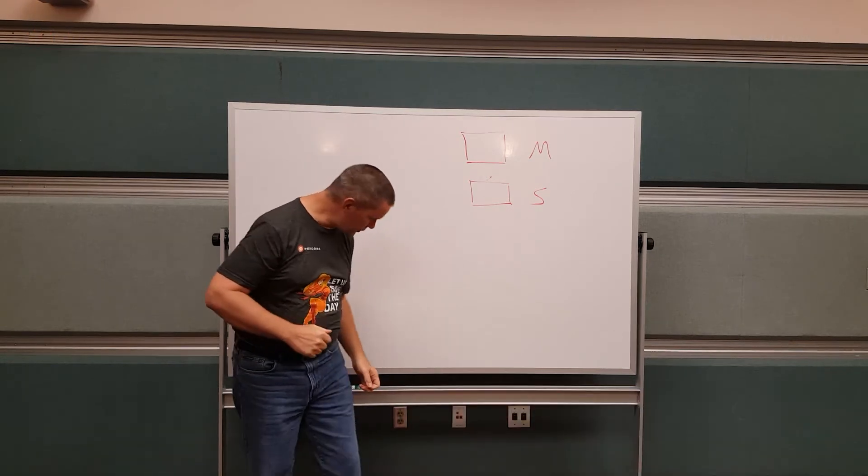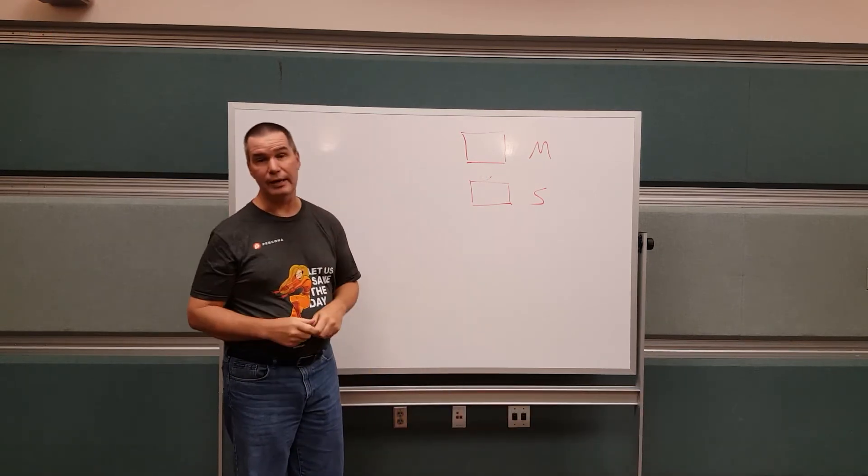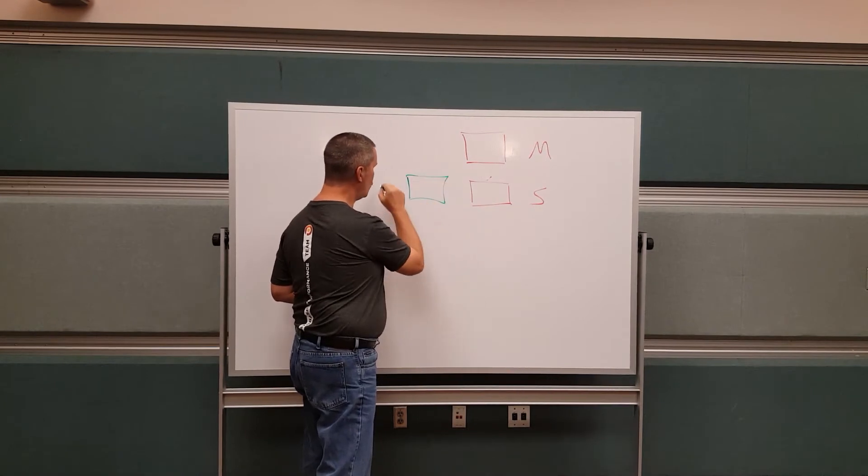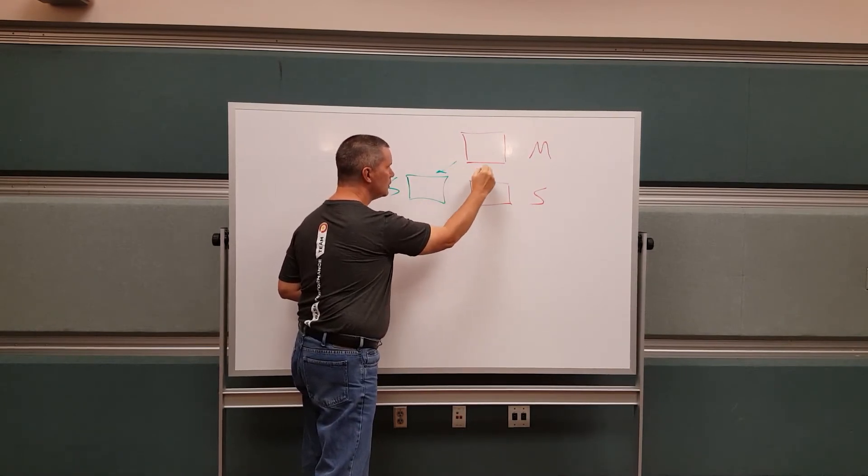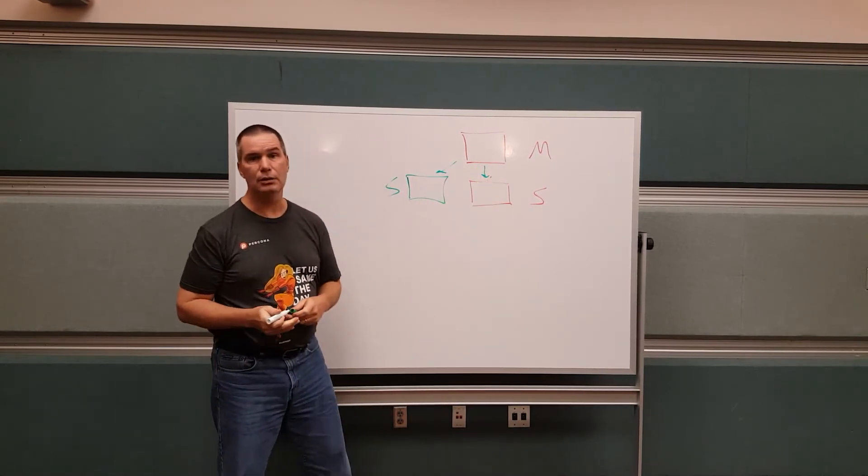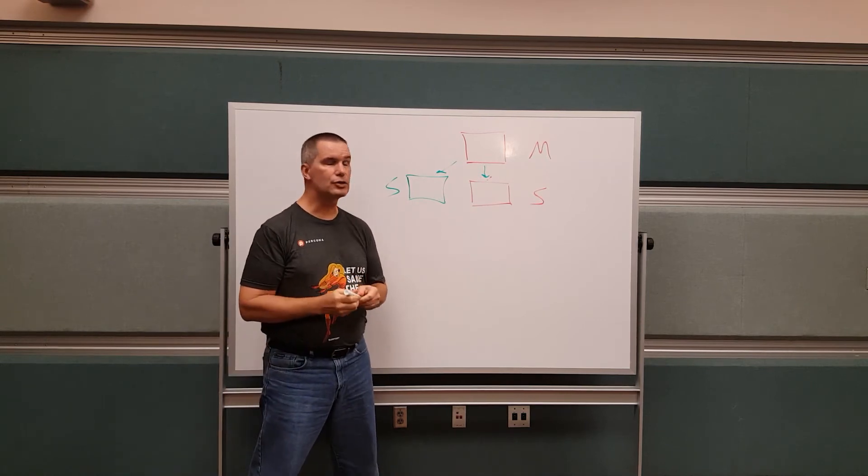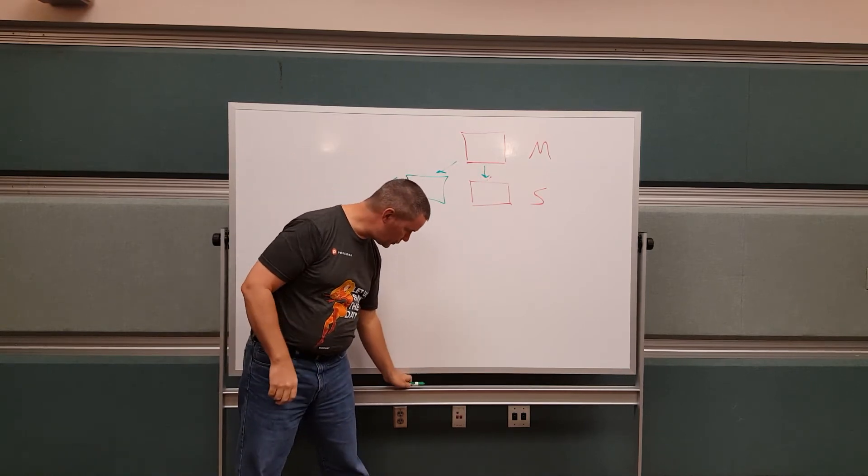But the reality is, sometimes we don't have just one slave. Sometimes we have two slaves, or potentially even more. And again, we have the communication going from the master to these other slaves. In this situation, I'm going to look at two slaves.